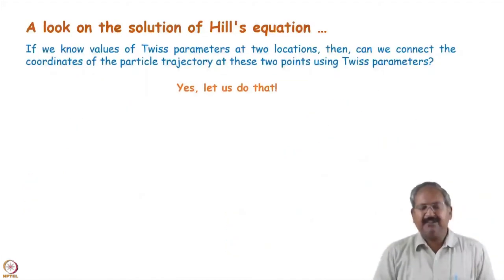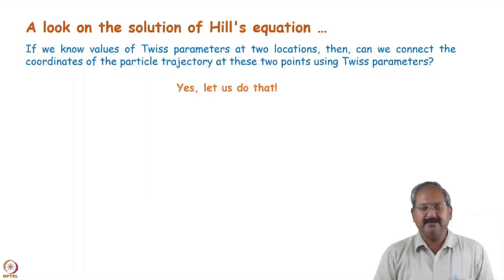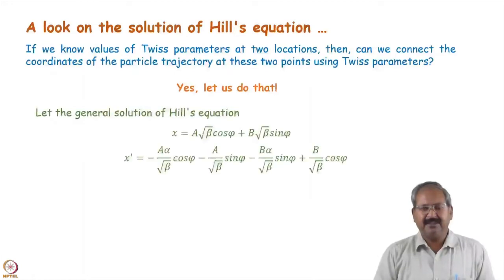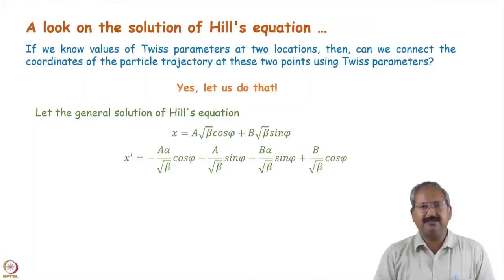If k is periodic, we can obtain a solution in which the Twiss parameters are also periodic. Among the possible range of solutions, we choose those parameters which are periodic in nature — we say this is the best solution. If we know the values of the Twiss parameters at two locations, we can connect particle trajectories between these two locations using the relationship between Twiss parameters and matrices.